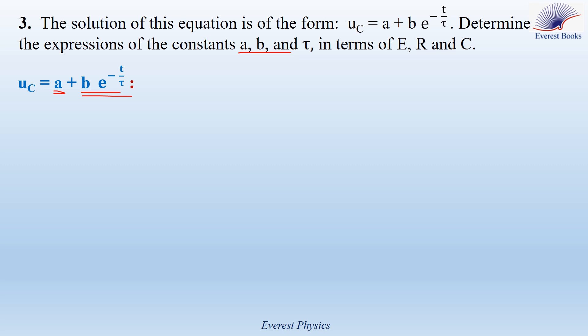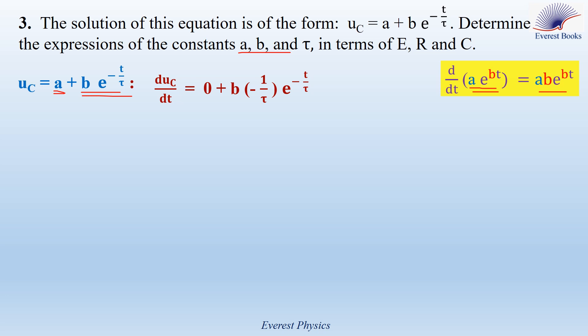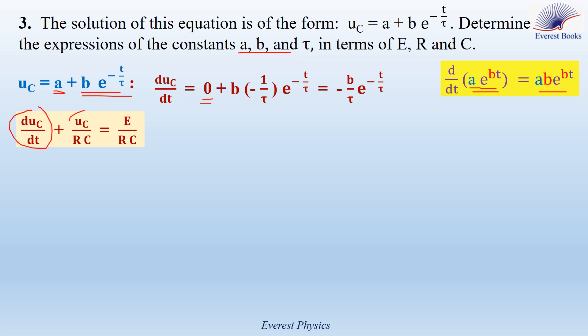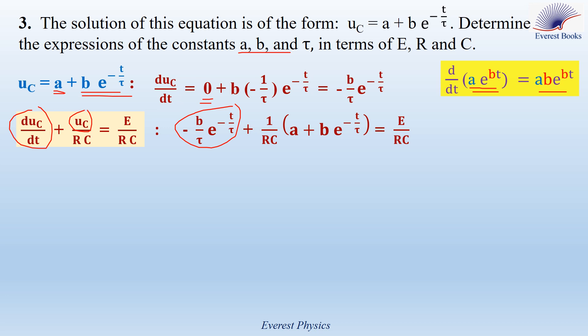To differentiate, recall that if you have a function A times e to the power Bt, where A and B are constants, then its derivative with respect to time is AB times e to the power Bt. So dUC/dt equals zero plus B times minus 1 over tau times e to the power minus t over tau, which gives minus B over tau times e to the power minus t over tau. Substituting into the differential equation and rearranging, we get: minus B over tau times e to the power minus t over tau plus A over RC plus B over RC times e to the power minus t over tau equals E over RC.